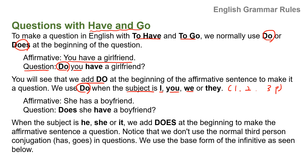Another example: 'She has a boyfriend.' The subject is 'she', so the affirmative uses 'has'. In the question form, we use 'does' and then the base form 'have': 'Does she have a boyfriend?' When the subject is he, she, or it — which is third person singular — we add 'does' at the beginning to make it a question. Remember that we don't use the normal third person conjugation 'has' or 'goes'. We use the base form, so you don't use 'has'.